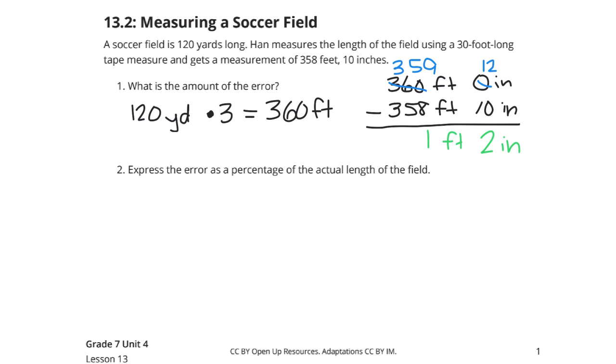So the amount of error is 1 foot, 2 inches, or since there's 12 inches in a foot, you could come up with a solution of 14 inches as well. Now, as 1 times 12 is 12 plus the 2 is 14.